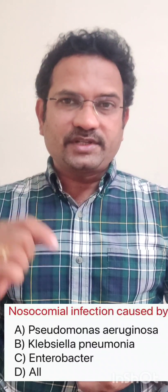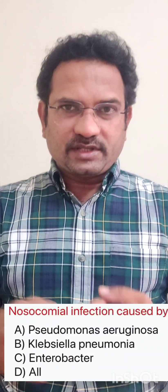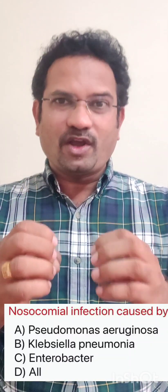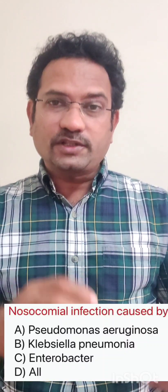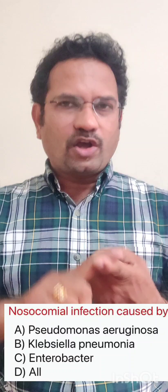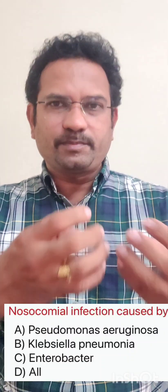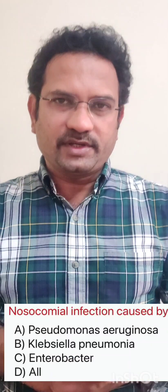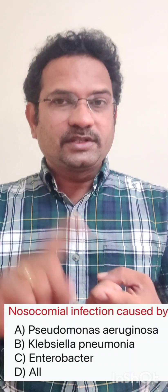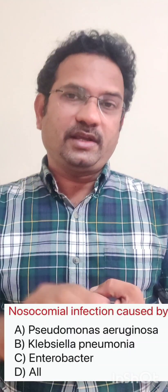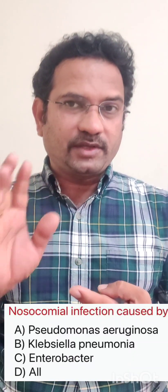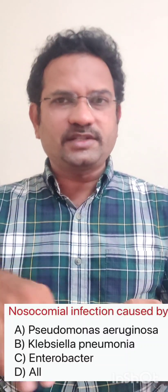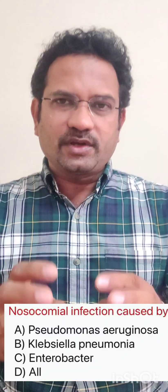Moving to the next question: Nosocomial infection is caused by — examples given are Pseudomonas aeruginosa, Klebsiella pneumoniae, Enterobacter, all of the above. Nosocomial infections are infections caused by hospital visits, also called hospital-acquired infections. There are two types: hospital acquired and community acquired. If you get infection when you visit a hospital, it is called nosocomial infection. Pseudomonas aeruginosa is responsible for blindness in hospitals after eye surgery. Klebsiella pneumoniae causes pneumonia, and Enterobacter causes intestinal problems. So all of them cause nosocomial infections.